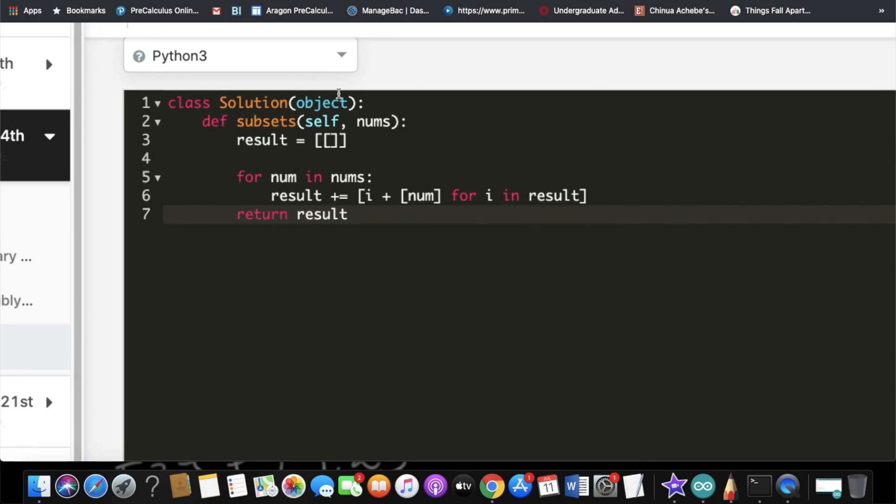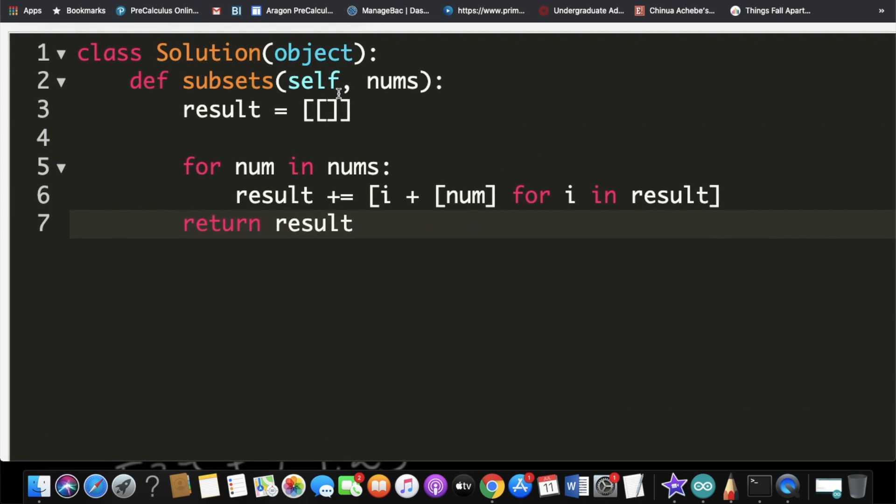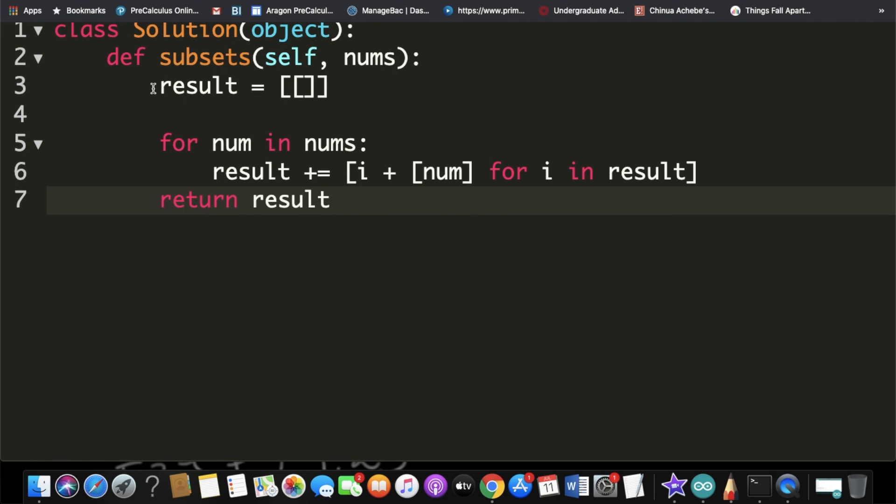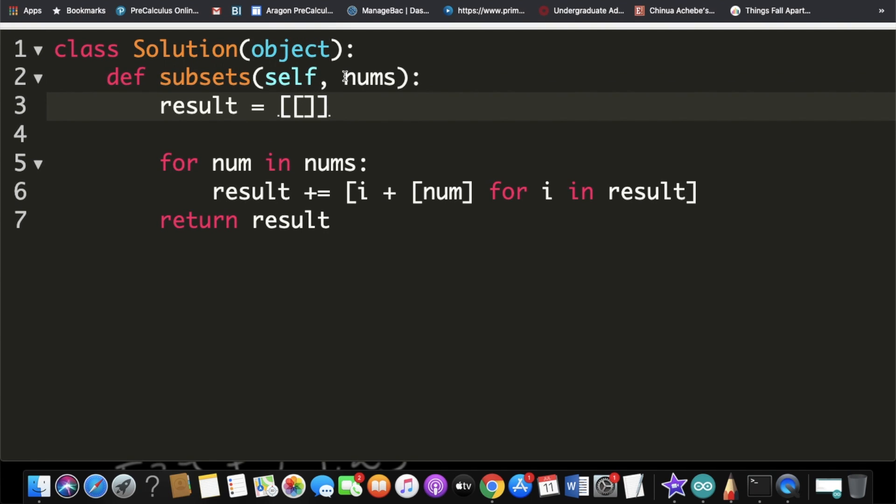I'll just show you what it is because it's pretty simple. In the beginning we create a result list and that list already contains an empty list, because no matter what our nums input is, our answer is always going to have an empty list. Then we're iterating for num in numbers, going through each of the numbers, and to our results we're adding this list.